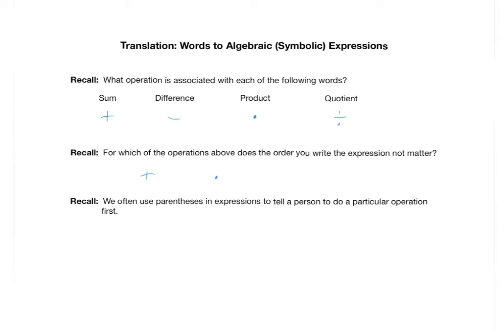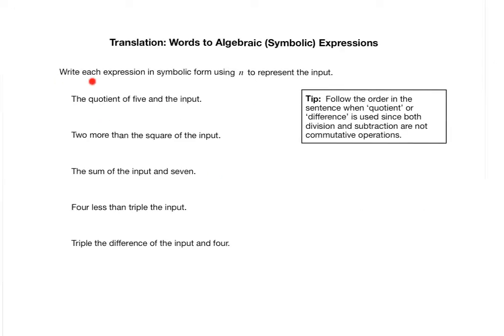Also recall from the past that we often use parentheses in expressions to tell a person to do a particular operation first. We'll talk about the order of operations in a coming screencast. But this is what we need to know to help us with our translations. So let's look at a typical example. We want to write each of the following expressions in symbolic form, and we're going to use the letter N to represent the input.